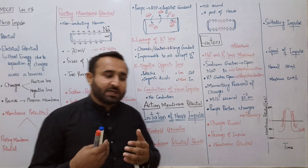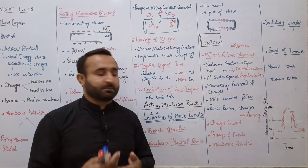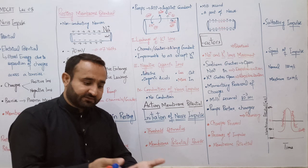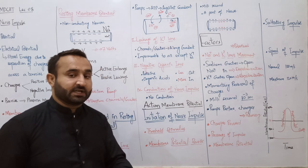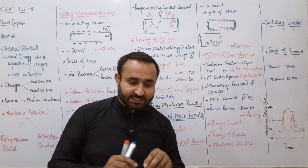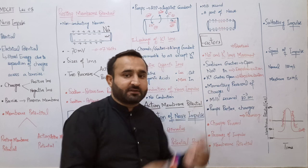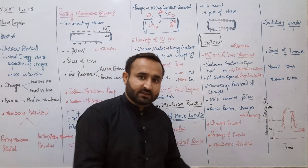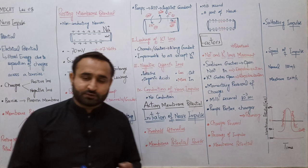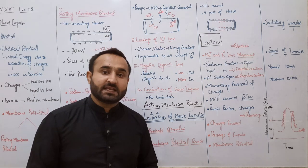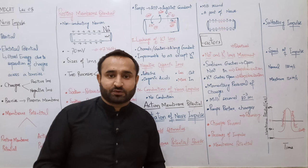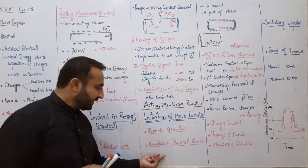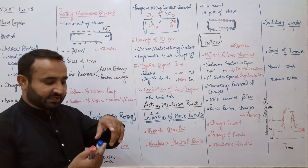Action potential یا active membrane potential - nerve cell impulse کو کیسے transmit کرتا ہے، transmission of nerve impulse، initiation of nerve impulse۔ Threshold stimulus کیا ہے؟ The minimum amount of stimulus which can initiate a nerve impulse is called threshold stimulus۔ Nerve impulse تب initiate ہوگی جب threshold stimulus gain ہو جائے گا۔